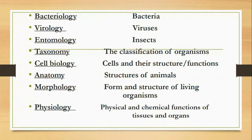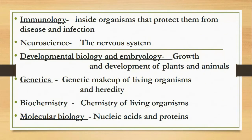Taxonomy studies the classification of organisms. Cell biology studies cells and their structure and functions. Anatomy covers the structures of animals. Morphology covers the form and structure of living organisms. Physiology studies the physical and chemical functions of tissues and organs. Immunology studies the systems inside organisms that protect them from disease and infection. Neuroscience studies the nervous system. Developmental biology and embryology study the growth and development of plants and animals.